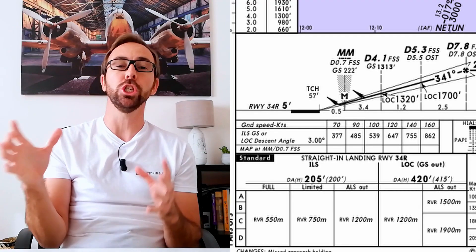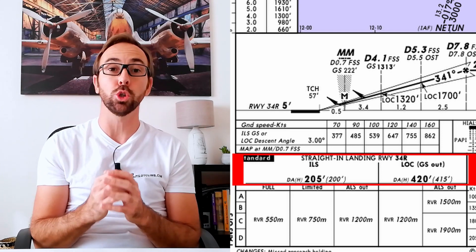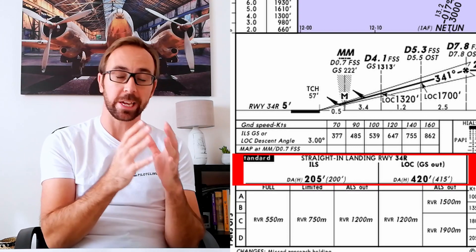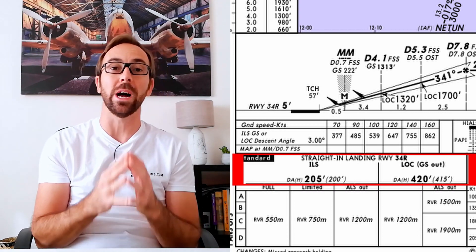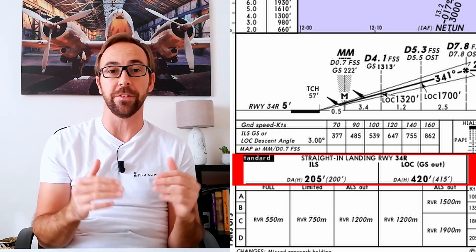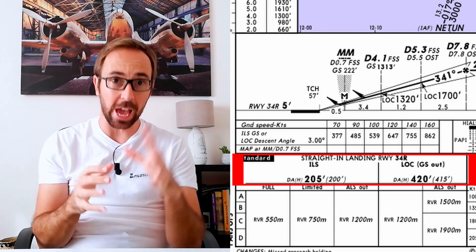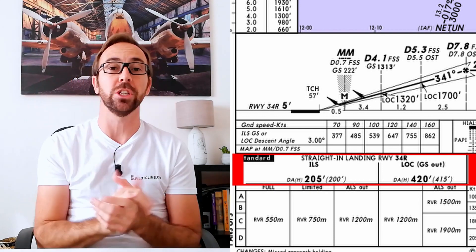Another big difference is the minima — the decision altitude. Every ILS category has a decision altitude, which is the altitude at which you must acquire the visual reference required to continue the approach. For ILS Cat 1, the minimum decision altitude is 200 feet. That means when you reach 200 feet on the ILS, you must be able to look outside and get the required visual reference. If you don't, you perform a go-around and missed approach. So depending on the ILS category, you have a different minima — ILS Cat 1 is 200 feet, ILS Cat 2 is 100 feet.